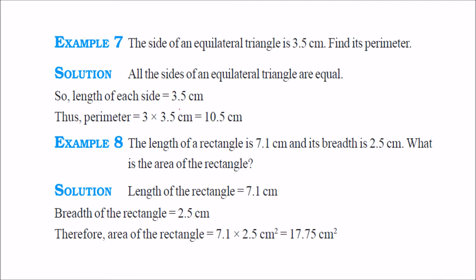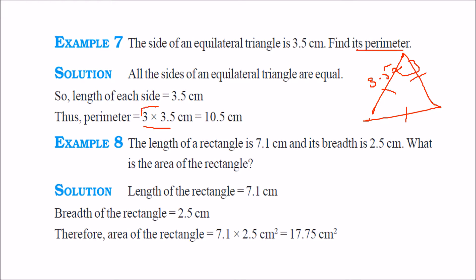The side of an equilateral triangle is 3.5 centimeter — find its perimeter. For an equilateral triangle, all sides are equal, so the perimeter is 3.5 into 3. Just multiply 3 by 35, which gives 105. There is just one decimal value, so you place it as 10.5 centimeters.